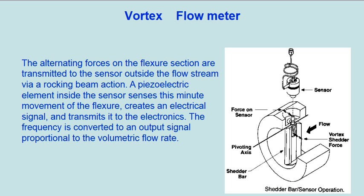The alternating forces on the flexure section are transmitted to the sensor outside the flow stream via a rocking beam action. A piezoelectric element inside the sensor senses this minute movement of the flexure, creates an electrical signal, and transmits it to the electronics. The frequency is converted to an output signal proportional to the volumetric flow rate.